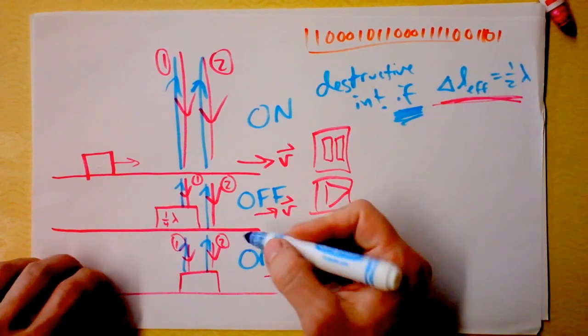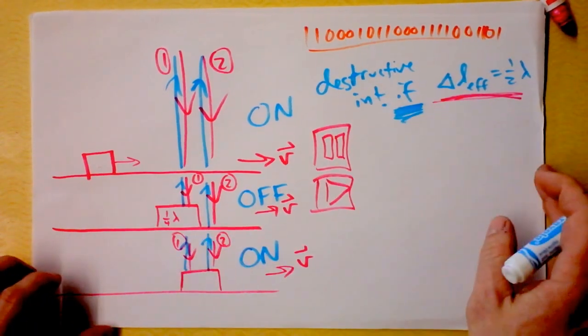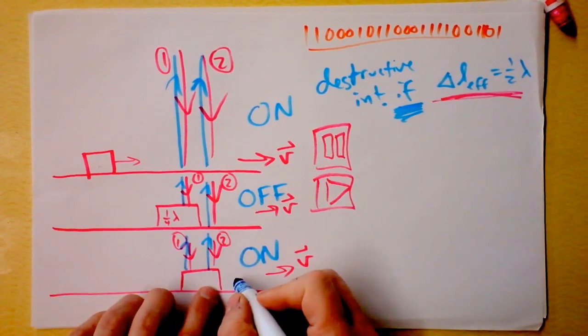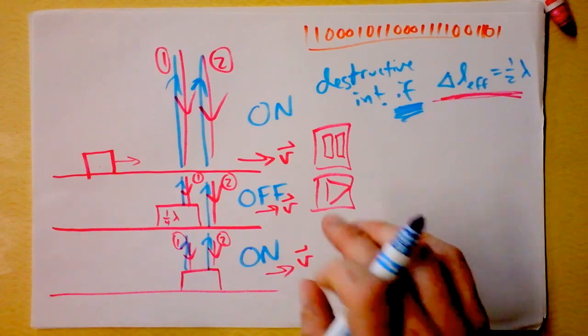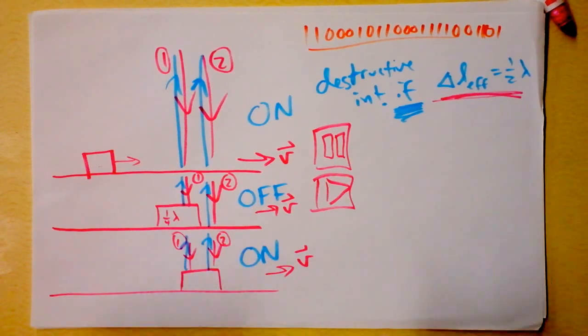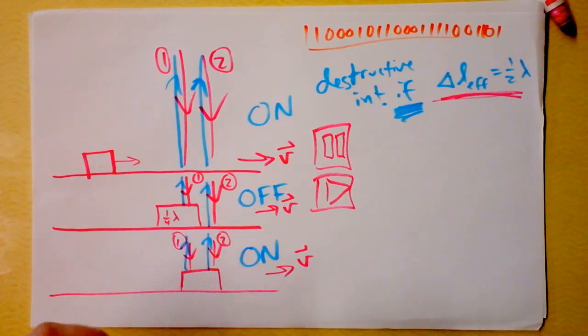So notice we can extremely precisely put ones and zeros down as ons and offs, where the bumps end and where they start. It's not about whether there's a bump or not, it's about whether we're transitioning between a bump or a not bump.